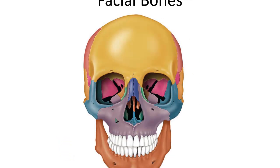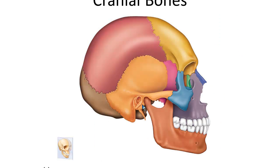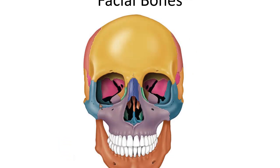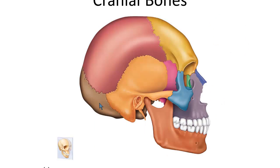The occipital bone is found on the back side of the skull. It's shown in brown in the diagram. There's a large hole in the occipital bone — shown on page 21 in the lower right-hand corner — an underside view of the skull. That large hole is where the spinal cord enters into the skull, and it is called the foramen magnum. The occipital bone is at the base of the skull on the back and has the large hole of the foramen magnum.